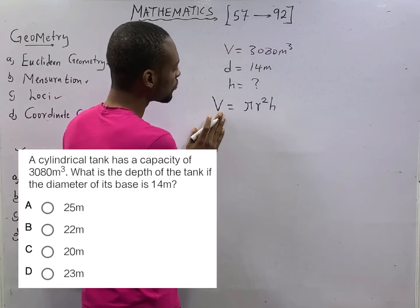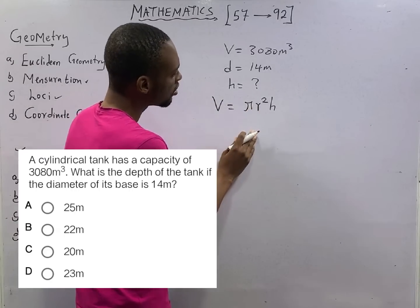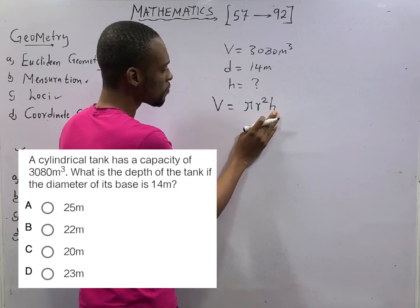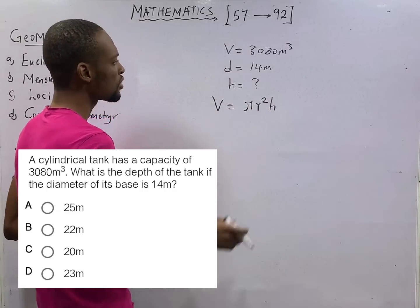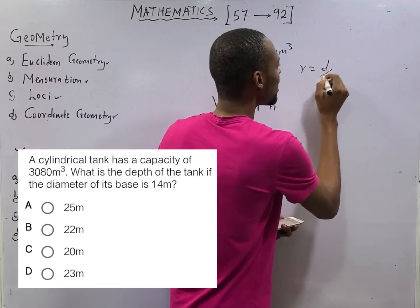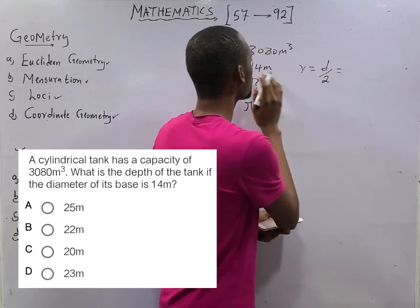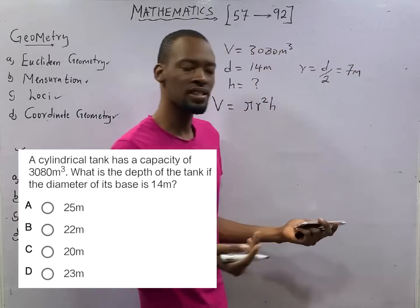Now we have V. Pi is constant. Then we are looking for height. Do we have radius? No. But we are given diameter. Radius is when you divide diameter by 2. So 14 divided by 2 is 7. The radius is 7 meters.